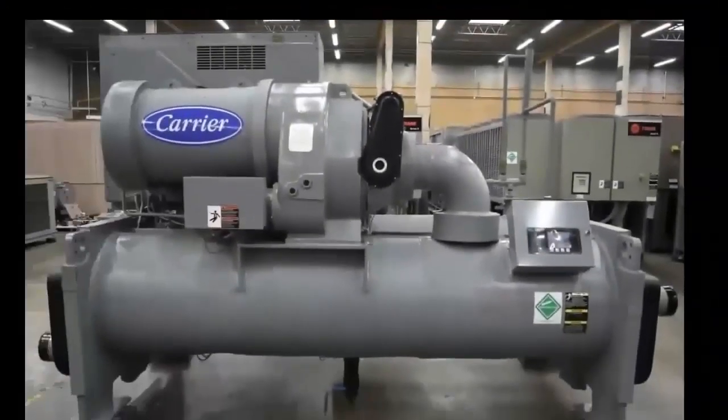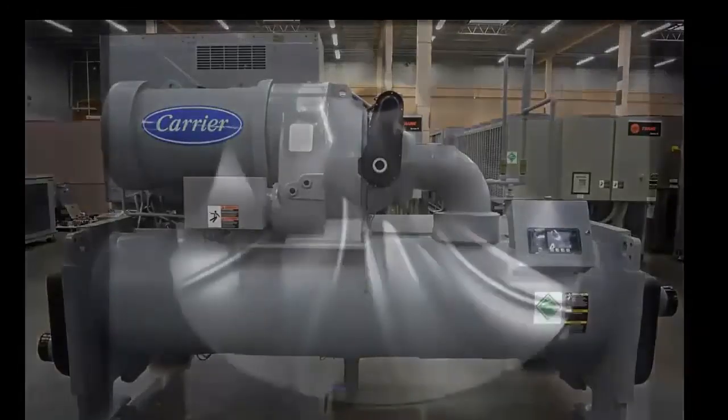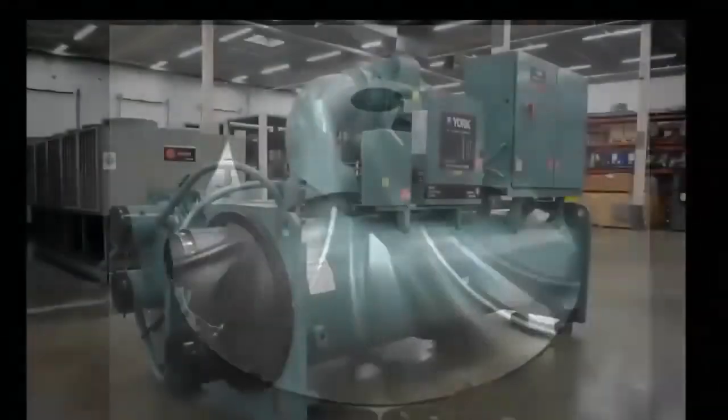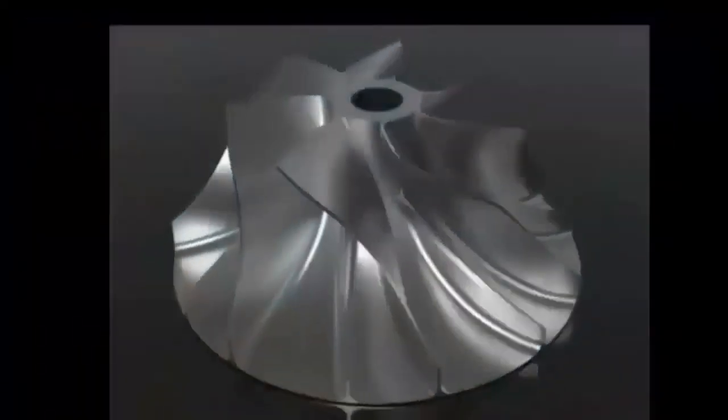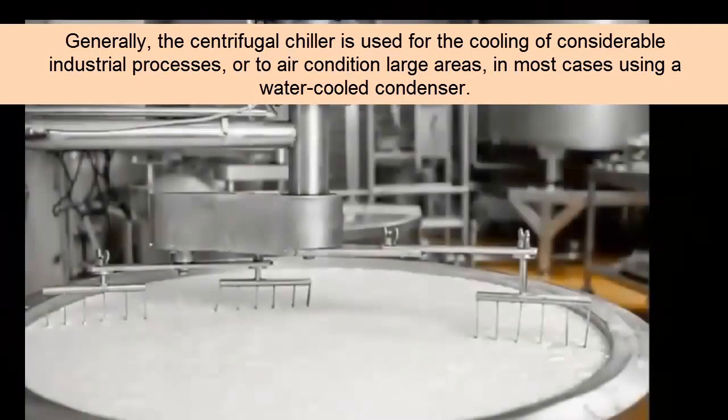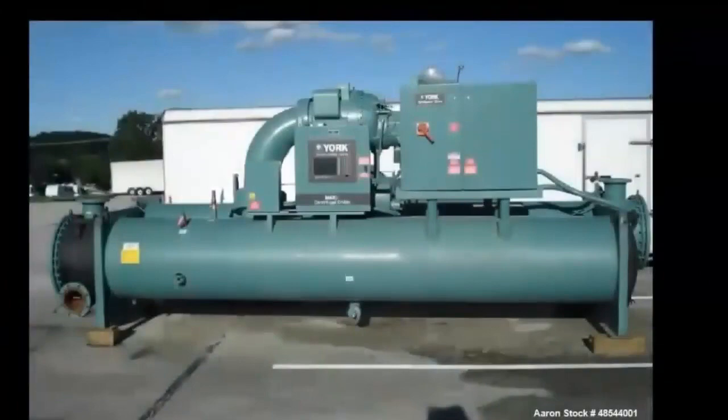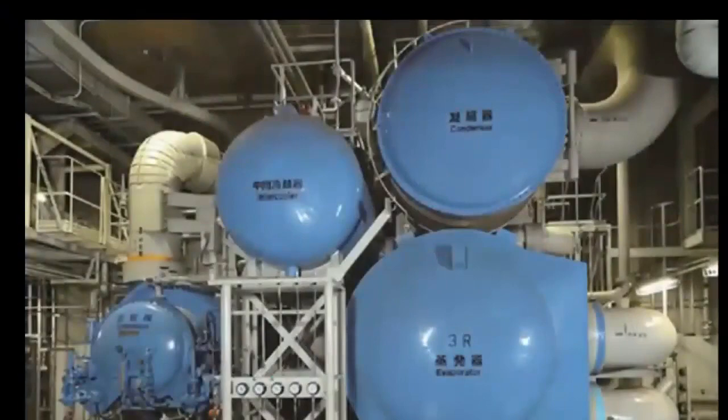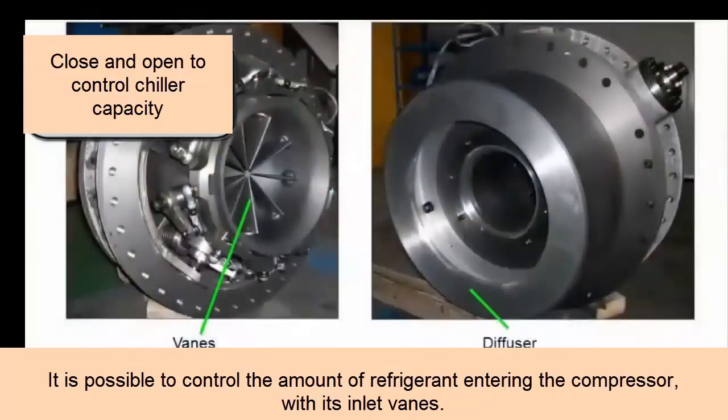That pressure will then allow us to reach the condenser and achieve condensation. That would be roughly the centrifugal compressor. There are other things that we have to see and specialize in. The most important thing is to begin to understand the operation of the centrifugal compressor. Getting closer to what we need, we are going to divide the chiller with centrifugal compressor into two types: the centrifugal chiller that uses oil and the centrifugal chiller that does not use oil. In this part we are talking about the chiller with a centrifugal compressor that is going to use oil.